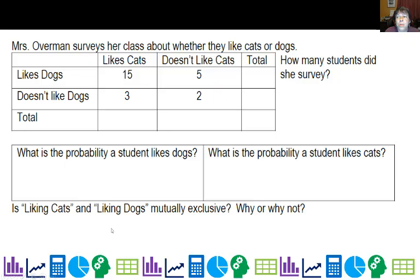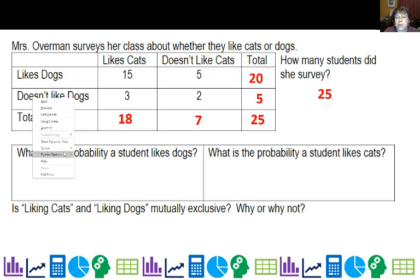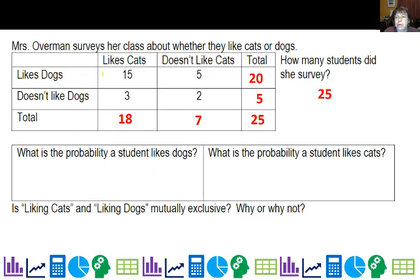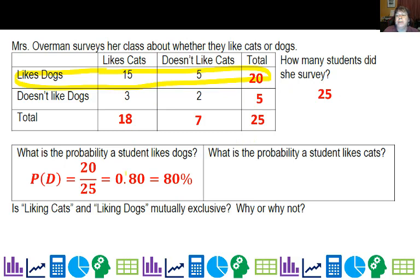Now let's look at this scenario where I look at a survey from my class about whether they like cats or dogs. You can see that the total number who like dogs was 20, those who didn't like dogs was 5, those who like cats was 18, and those who didn't like cats was 7, giving me a total of 25 students that I surveyed. So what's the probability a student likes dogs? Well, if they like dogs, that actually means all of this. So all this entire row is like dogs. So I take the 20 out of the total, 25, and that would give me 0.80 or 80 percent.